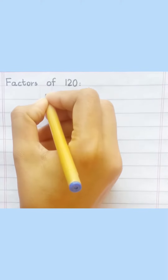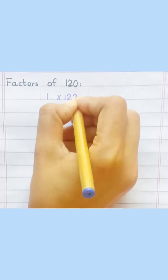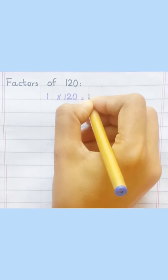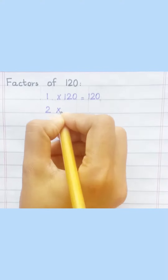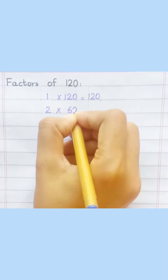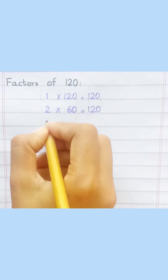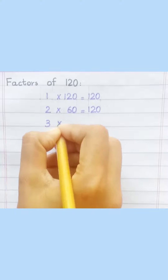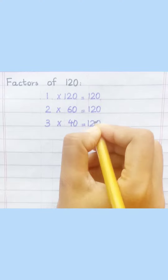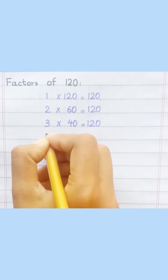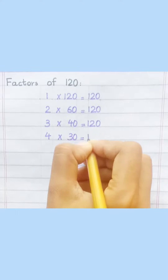Factors of 120. One 120s are 120. Two 60s are 120. Three 40s are 120. Four 30s are 120.